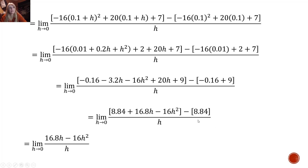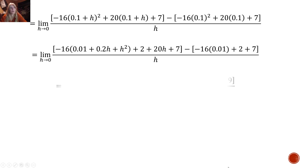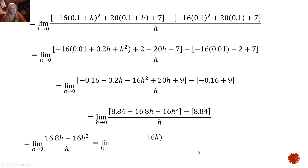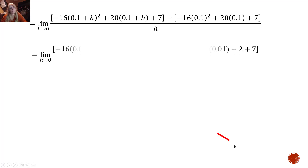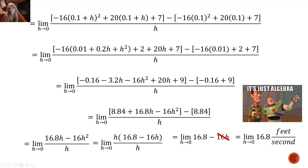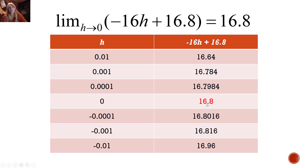All I'm going to have left are terms with h's. I can factor out an h on top, then the h's cancel. Now I can let h go to zero. Once I let h go to zero, I get the value 16.8 — which is a rate in feet per second, because my function was in feet and time was in seconds. If I go look at my table, I see that I get 16.8 when I let h go to zero.